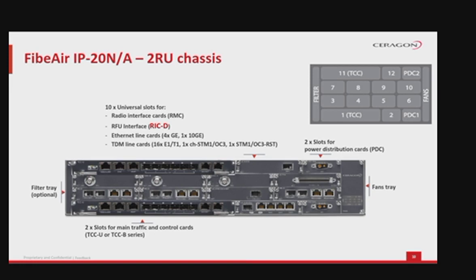TDM line cards available include: LIC-T16 with 16 E1s or 16 T1s; LIC-155 with 1 channelized STM-1; and LIC-STM-1 or OC3 RST with 1 STM-1. In the two rack unit chassis, the power distribution cards, PDC, are redundant to each other and must be inserted in their designated places. One PDC card is sufficient to power the entire IP20N.